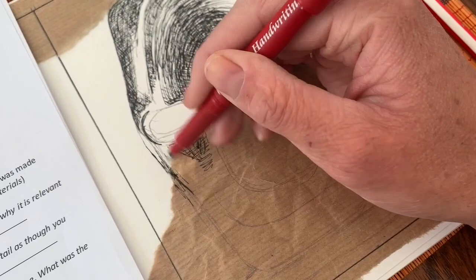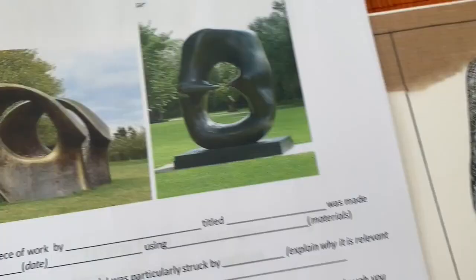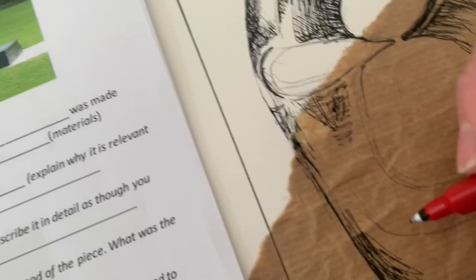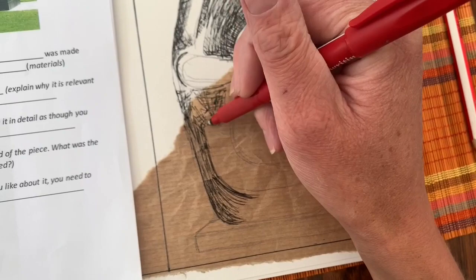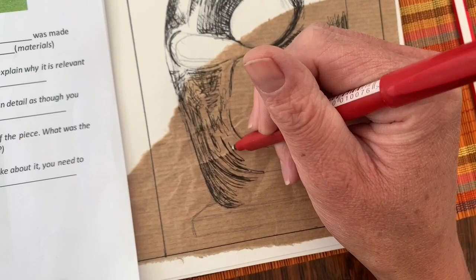To add tone and mark making, I'm constantly referring back to the original image and making sure that the direction of my marks work in harmony with the sculpture. If I'm working around a corner, my mark making will flow around that corner as well.